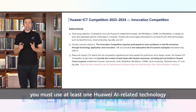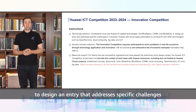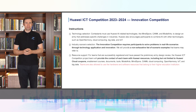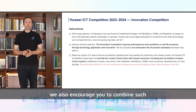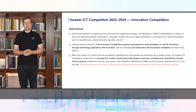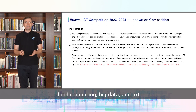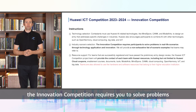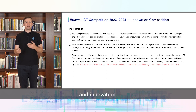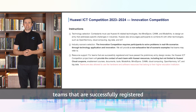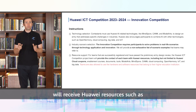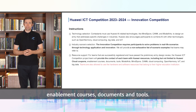For the technology selection, you must use at least one Huawei AI-related technology to design an entry that addresses specific challenges in industries. Such technologies can include MindSpore, CAN, and Model Arts. We also encourage you to combine these AI-related technologies with other technologies such as Open Harmony, Cloud Computing, Big Data, and IoT. For the industry scenario selection, the innovation competition requires you to solve problems in real-life scenarios through technology application and innovation. In terms of resource support, teams that are successfully registered and have passed a preliminary entry design review will receive Huawei resources such as Huawei Cloud coupons, enablement courses, documents, and tools, which will be sent to the contact of each team. You are also welcome to use the hardware and software resources of your school.